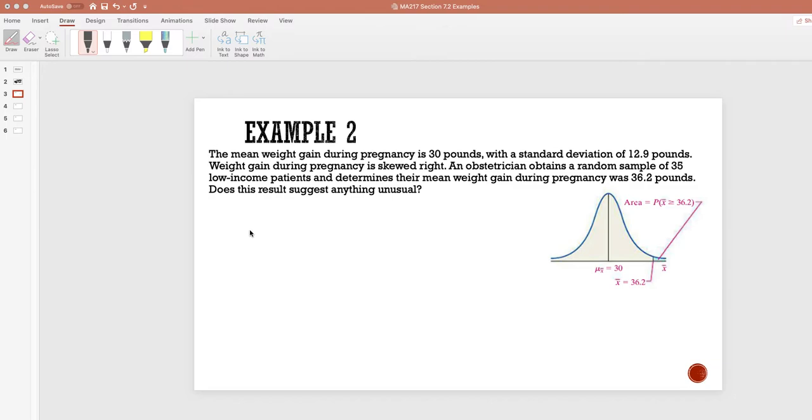The mean weight gain during pregnancy is 30 pounds with a standard deviation of 12.9 pounds. Weight gain during pregnancy is skewed right. An obstetrician obtains a random sample of 35 low-income patients and determines their mean weight gain during pregnancy was 36.2 pounds. And we want to know, does this result suggest anything unusual?